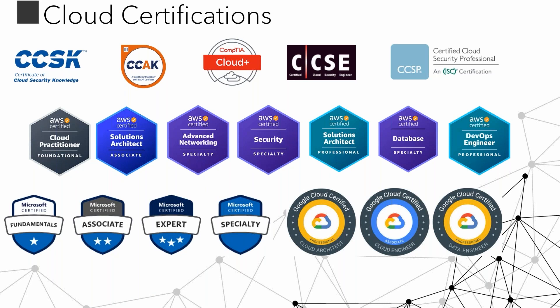You need to figure out which certifications are best for the particular job role you're planning for. For example, if you want to work specifically in AWS security, you can go for the AWS Certified Security Specialty. For Azure, you can go for AZ-500. Google also has a certification, and there's also CCSP. It's very important to have at least one cloud certification relevant to your job role.